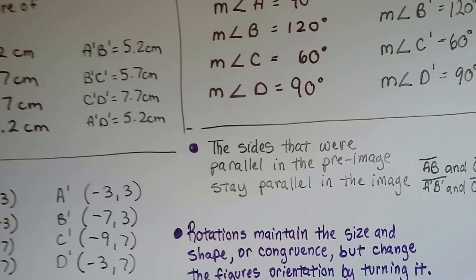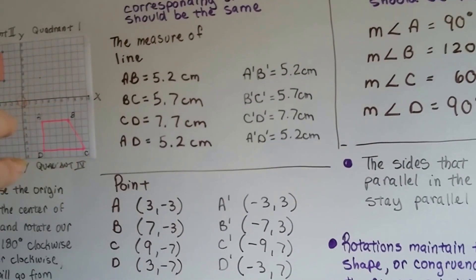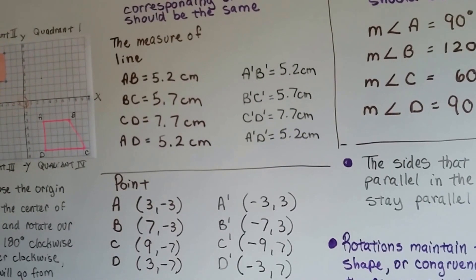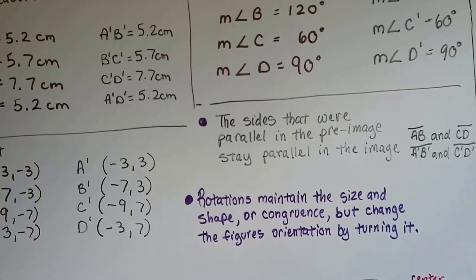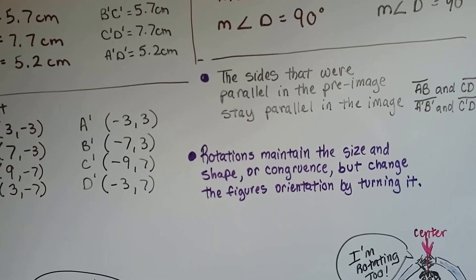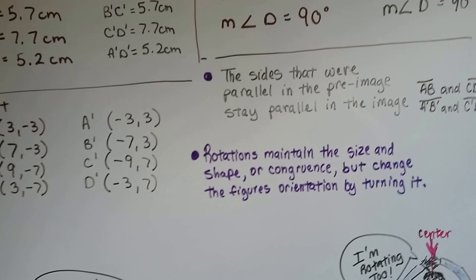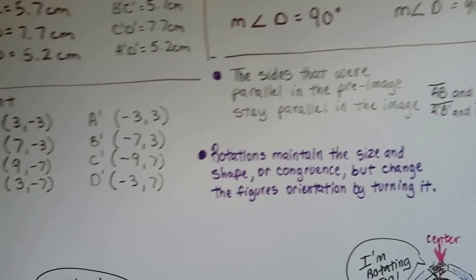So the sides that were parallel in the pre-image - AB and CD - right here, these are parallel. They're also parallel in the image. So rotations maintain the size and shape or congruence, but they change the figure's orientation by turning it.